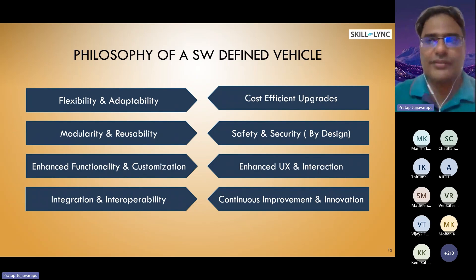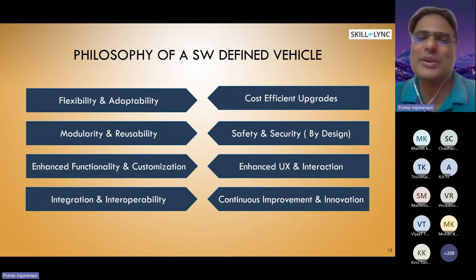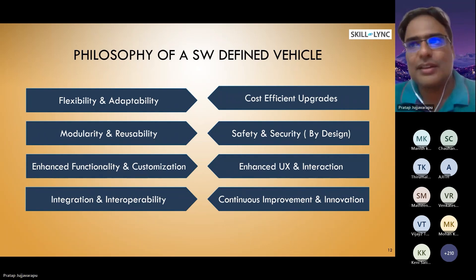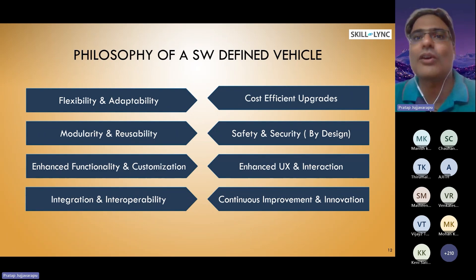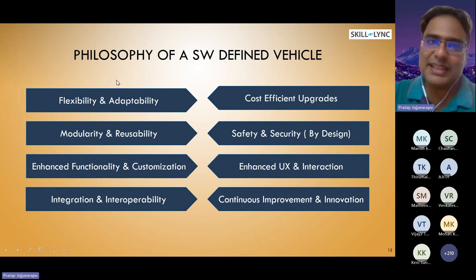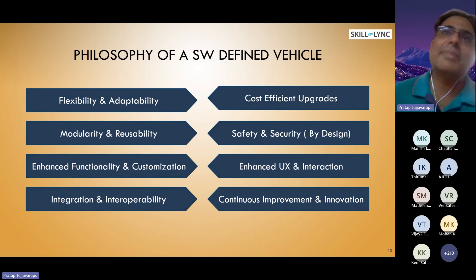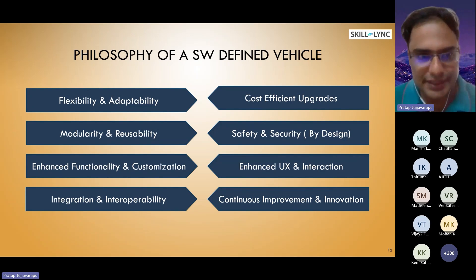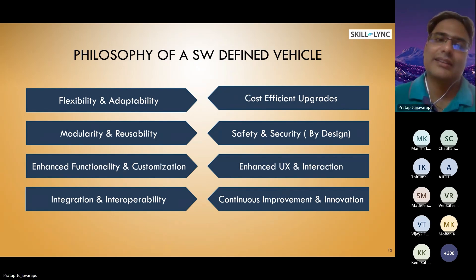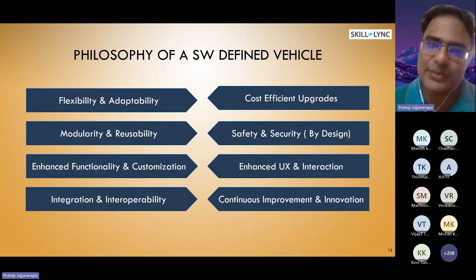Now let us look into the philosophy of a software-defined vehicle. My intention is to make sure you don't miss any of these things — if you miss any, you cannot call it a software-defined vehicle. The first one is flexibility and adaptability. Flexibility is the loose coupling of software and hardware that I described previously. Adaptability is the OTA part — your over-the-air update ability. Any software-defined vehicle needs to have this flexibility and adaptability.